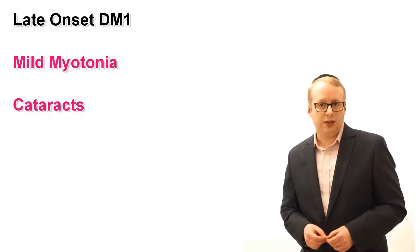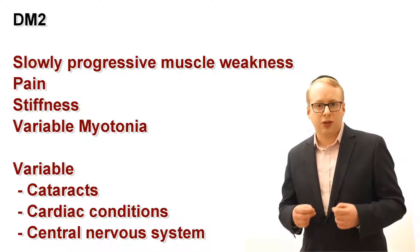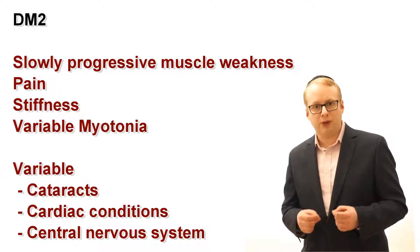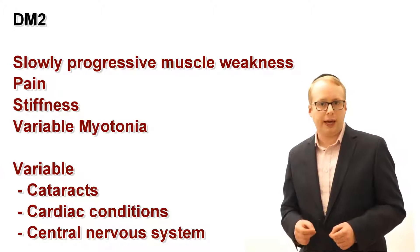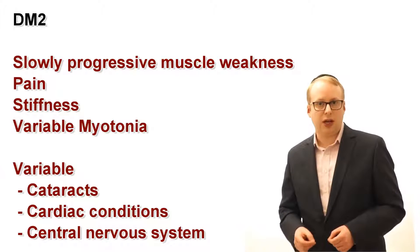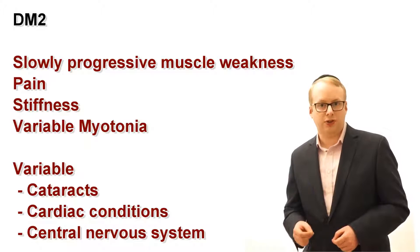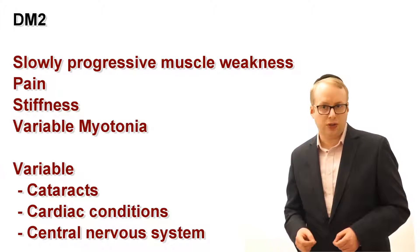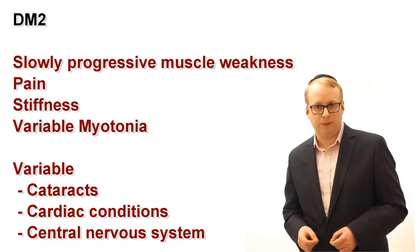Late onset DM can be very subtle and may only show features of myotonia and cataracts. In DM2 there is a slowly progressive muscle weakness over the age of 50 with associated pain, stiffness and variable myotonia. The cataracts are only present in a minority and so it's easy to misdiagnose as fibromyalgia.